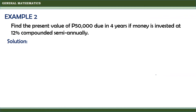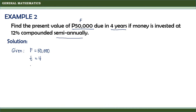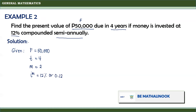Just like the first example, we write down our given. Since we are looking for the present value of 50,000, then 50,000 is the future value, so F equals 50,000. Since it is due in 4 years, T equals 4. It is compounded semi-annually, so M equals 2. The annual rate is 12%, so I(M) equals 0.12.